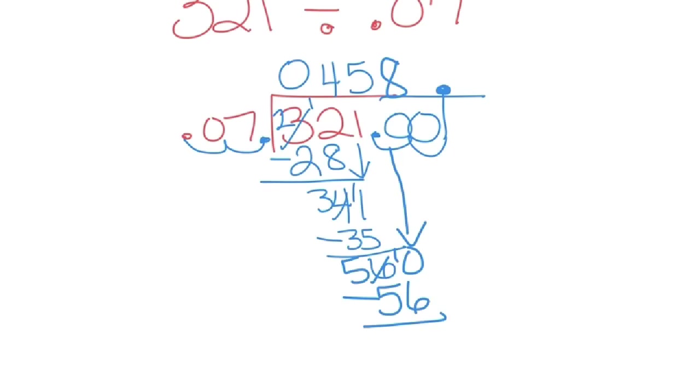Never forget your borrowing. 10 minus 6 is 4. Bring down our last 0. 7 goes into 40. That will be 5 times. 5 times 7 is 35. Subtract. We get 5 again.